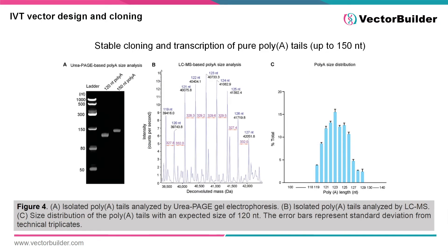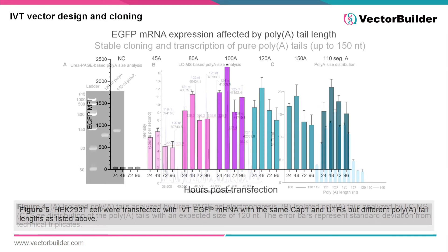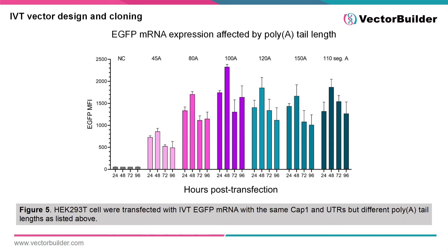Our IVT mRNA vectors allow for stable transcription of poly-A tails. As shown in Figure 4, both 120-nucleotide and 150-nucleotide poly-A tails can consistently be produced at VectorBuilder. Looking at LC-MS-based analysis of mRNA with a 120-nucleotide poly-A tail, we can see that the transcripts produced by our vector all fall within the expected size range.